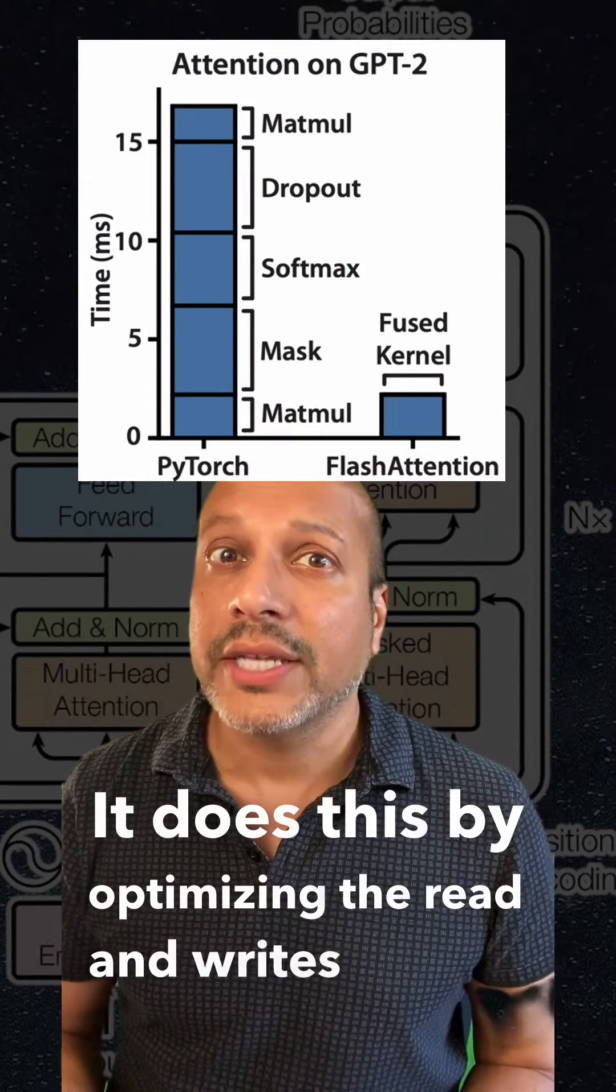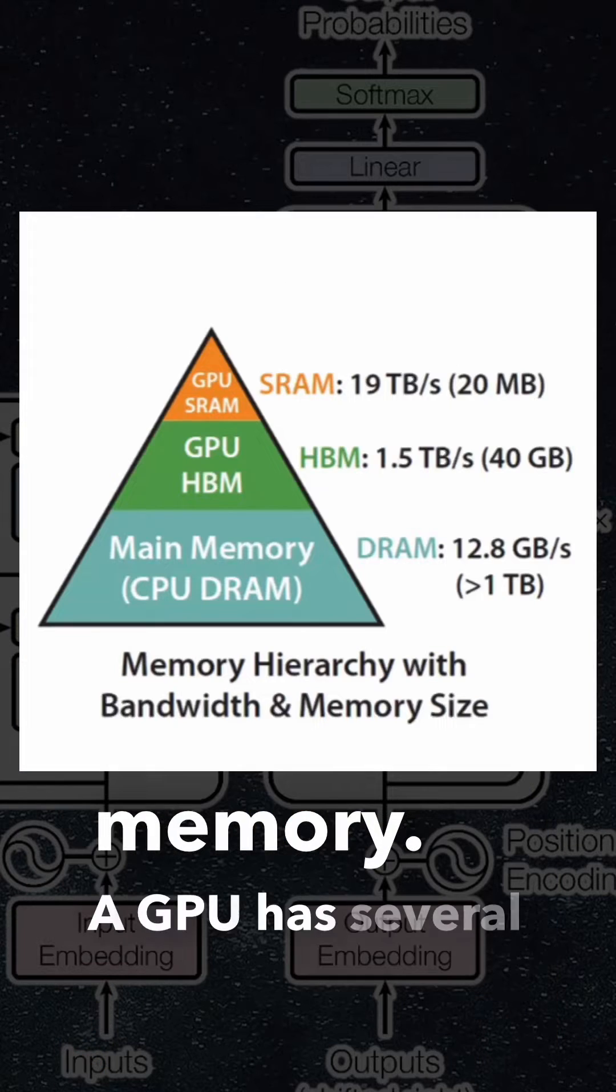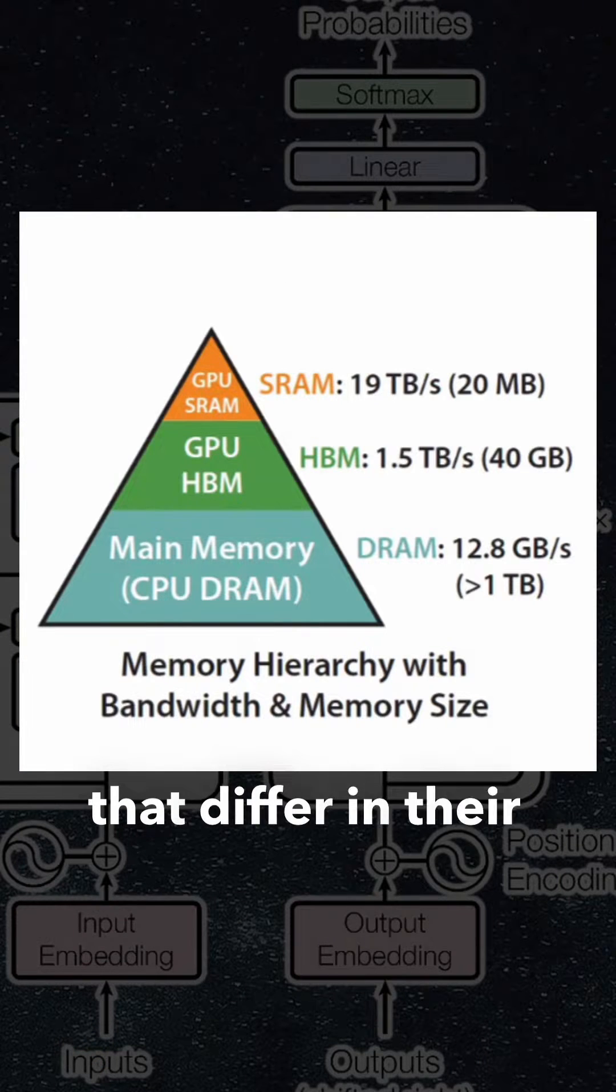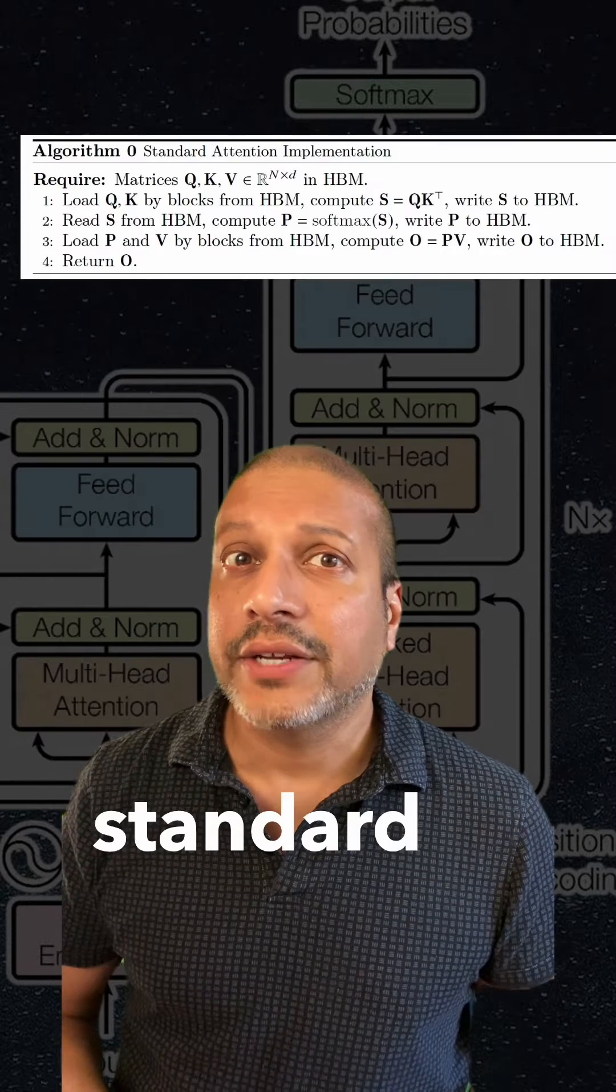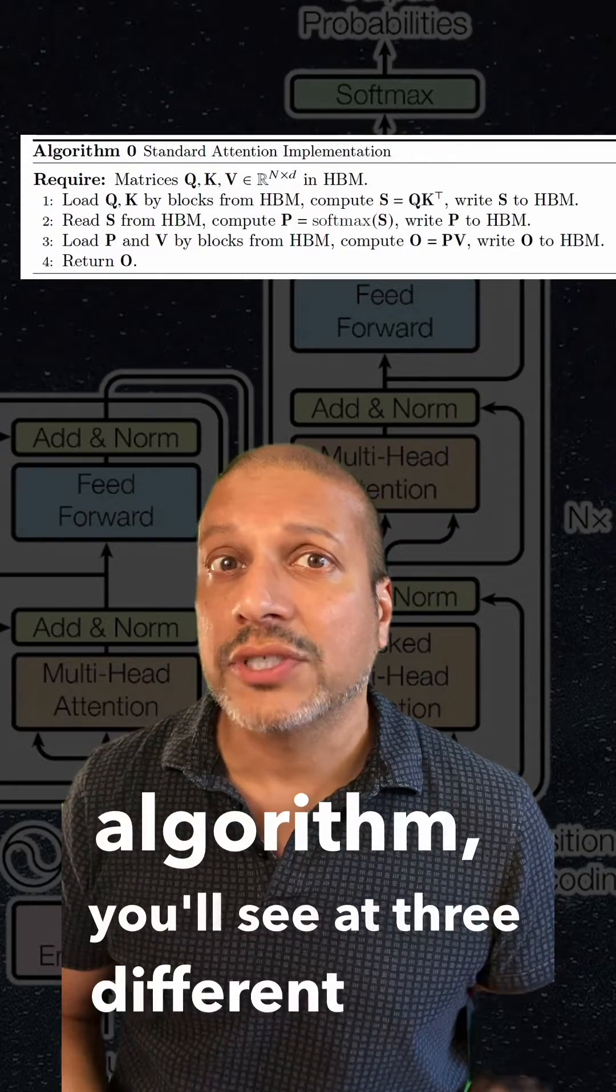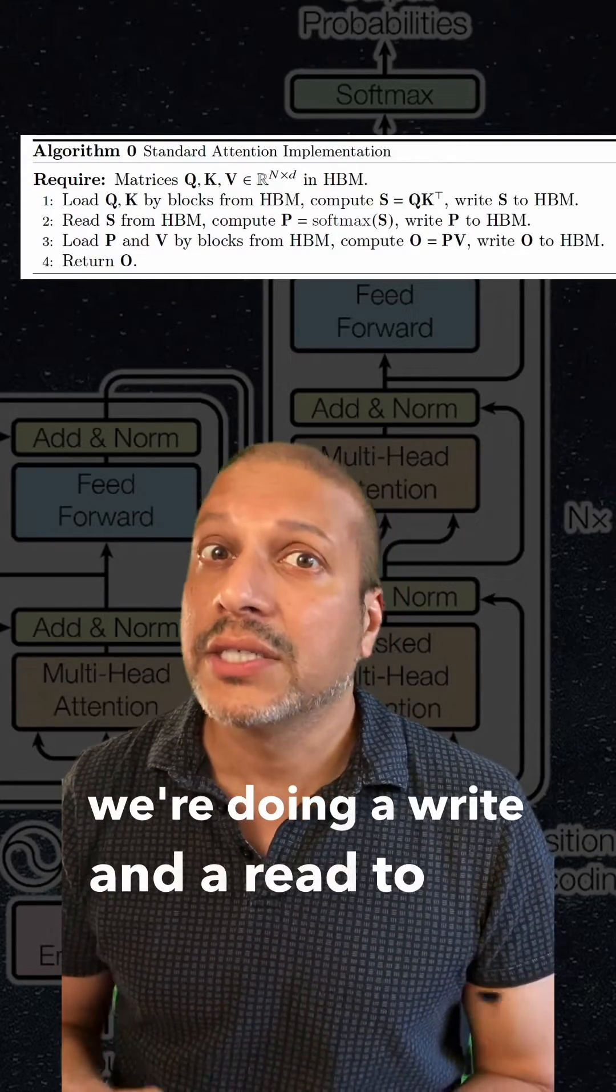It does this by optimizing the read and writes of GPU memory. A GPU has several levels of memory that differ in their access speed. If you look at the standard attention algorithm, you'll see at three different times we're doing a write and a read to the HBM memory.